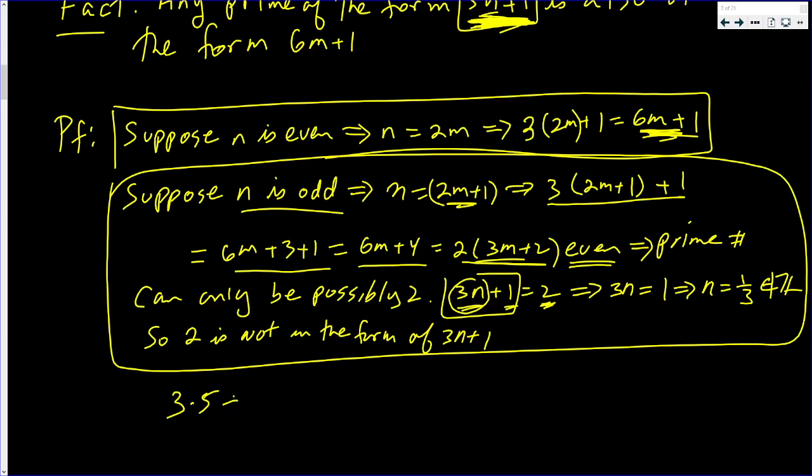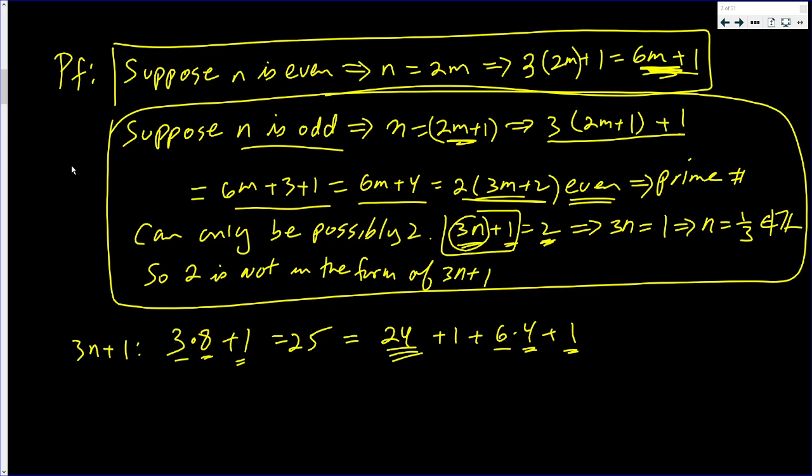Any number in that form: 3 times 5 plus 1. That's in the form of 3n plus 1. Well, this is 16. So I need to write 15 there. Okay, I apologize. That number right there is not even. How about we try 8. 3 times an even number plus 1. That's 25. Well, that's 24 plus 1, which is 6 times 4 plus 1. 6 times an integer plus 1. And 25 is not even prime. Doesn't matter.